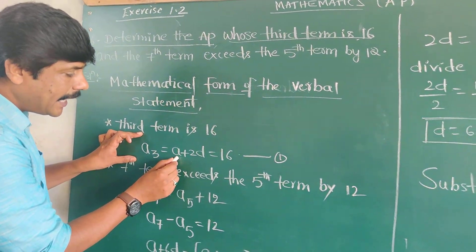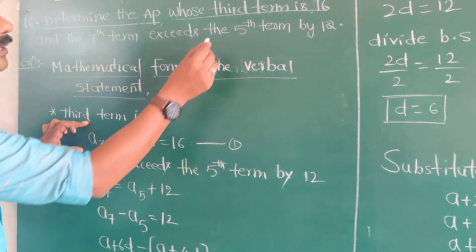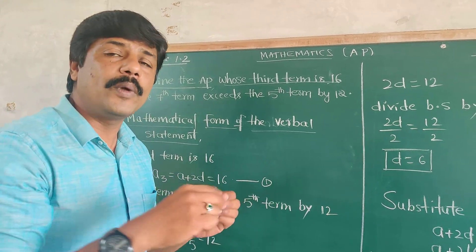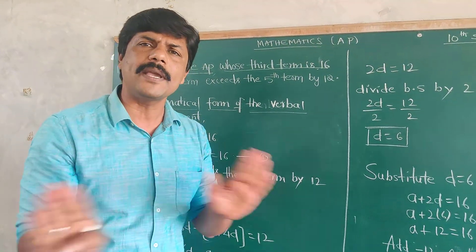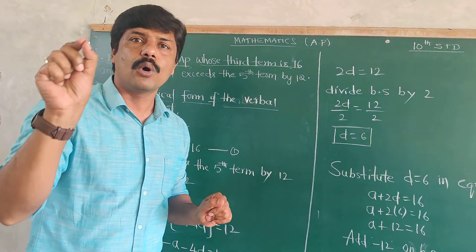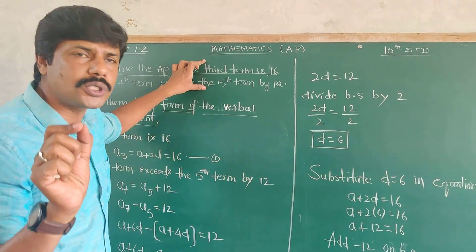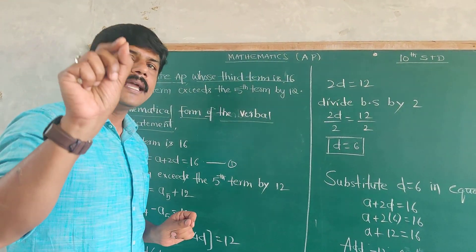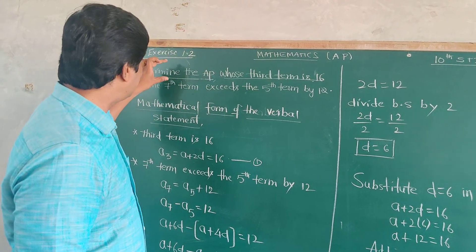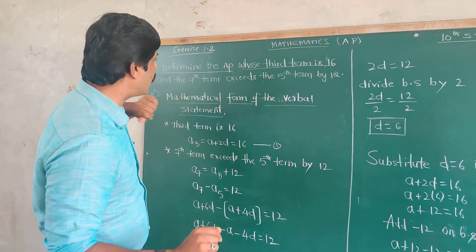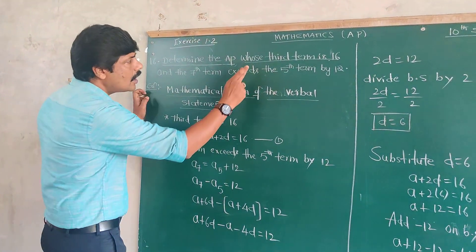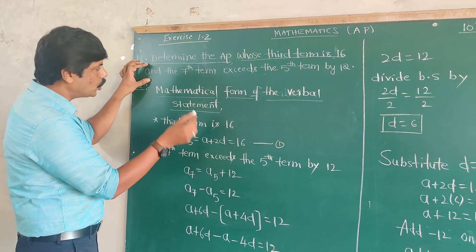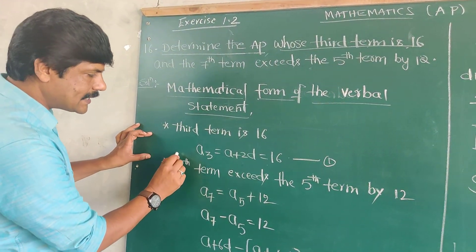What is the third term? The third term is A plus 2D. The third term is given as 16. With this condition, we have to find A and D. There is no other way — only the conditions and clues given in the question can help us find A and D. Once we find A and D, we will determine the AP. The first clue is: third term is 16.